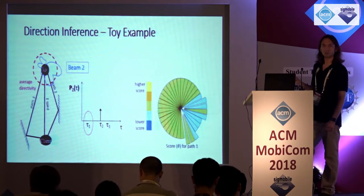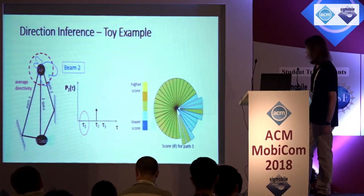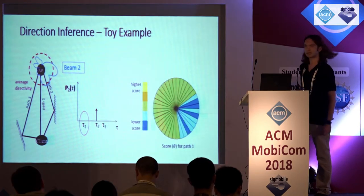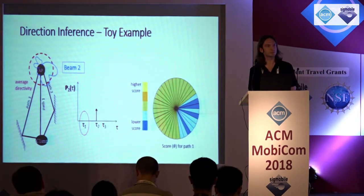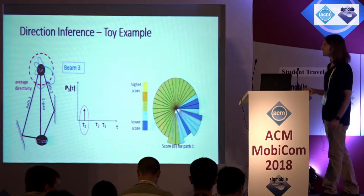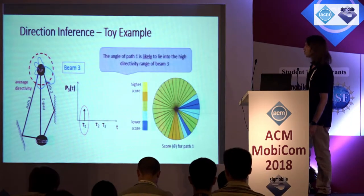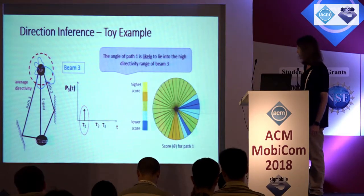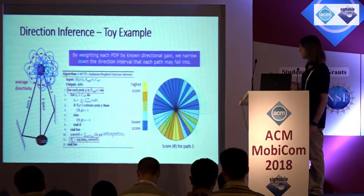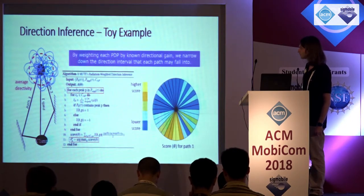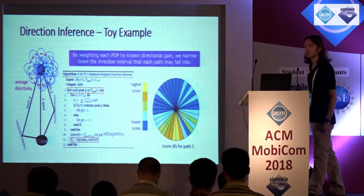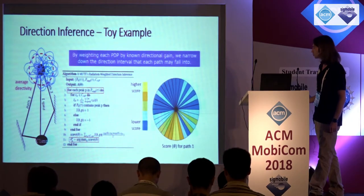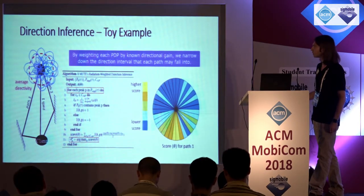Same for beam two — beam two does not capture path one either, so for the angles corresponding to high-directivity regions of beam two, I further lower the score. Beam three is different: beam three captures path one, so it is likely that the angle of path one lies in one of the two high-directivity regions of beam three. I increase the score. Repeating this for all beams and all angles, I end up with a score for each possible angle. The highest score corresponds to the correct angle for path one.